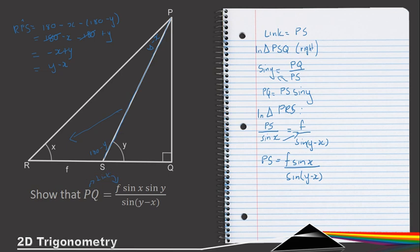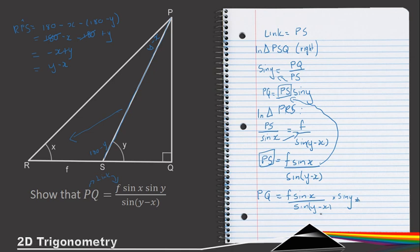We now have both expressions. We substitute PS = f·sin(x) / sin(y - x) into PQ = PS·sin(y), giving PQ = [f·sin(x) / sin(y - x)] × sin(y). In simplest form: PQ = f·sin(x)·sin(y) / sin(y - x), and we have proved the expression.